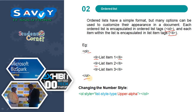Changing the number style means when we are using 1, 2, 3 we apply one style, but if we want capital alpha, capital beta, capital gamma, we need to change things using list-style-type.